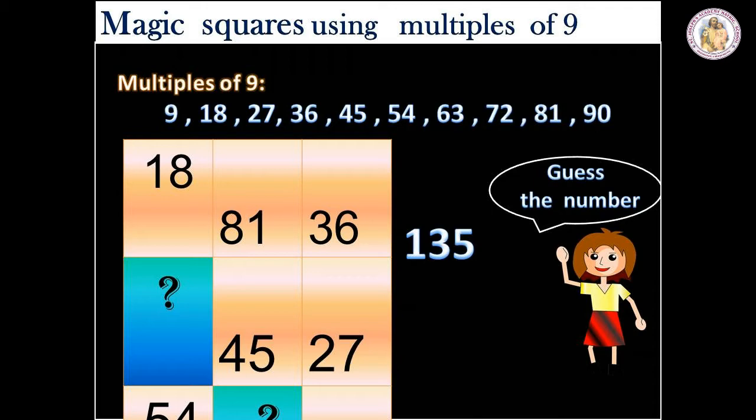We have to put these multiples of 9 into the magic squares without repetition. If we add all these numbers horizontally or vertically, the total should be 135. Guess the number should fill in blue box. It is easy to find the other number by adding 45 and 27 and subtract this with 135.